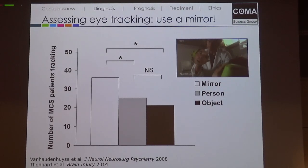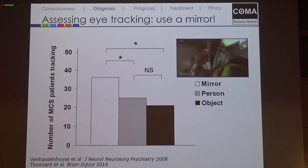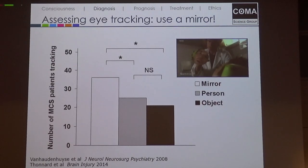One reason we miss signs of consciousness is how we assess. The first signs of recovery often involve visual tracking, and we typically just move a pencil or finger. We now know that if we simply use a mirror, many more patients will actually show visual tracking. That's not a big investment — it's not high tech. We should all have a small mirror when seeing patients in intensive care who are surviving coma and opening their eyes, to assess visual pursuit.